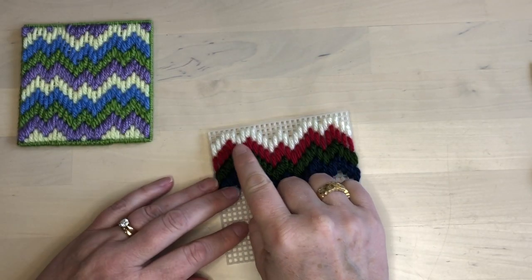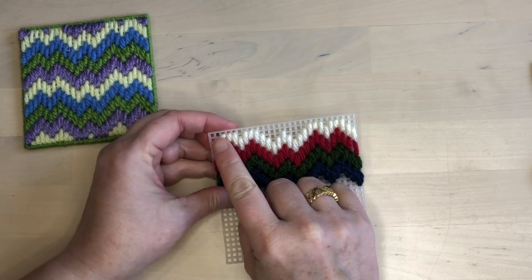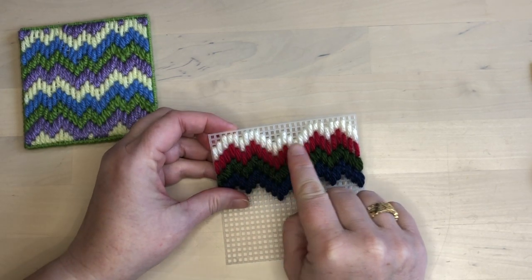The rest of the rows will stitch in the same way but at the top and the bottom of the piece there will be partial stitches.